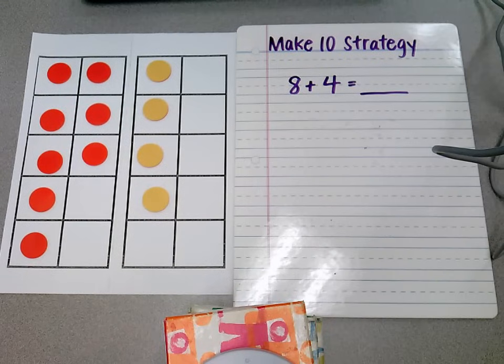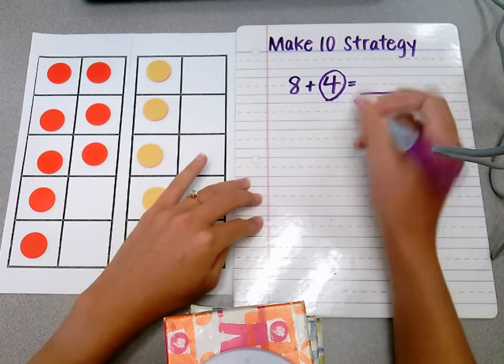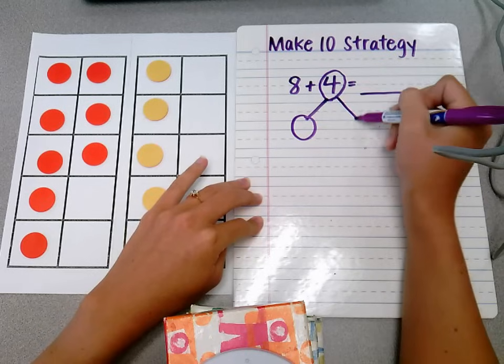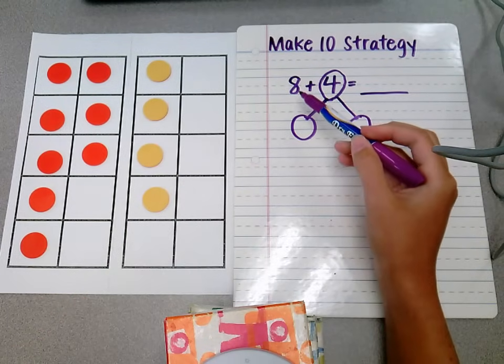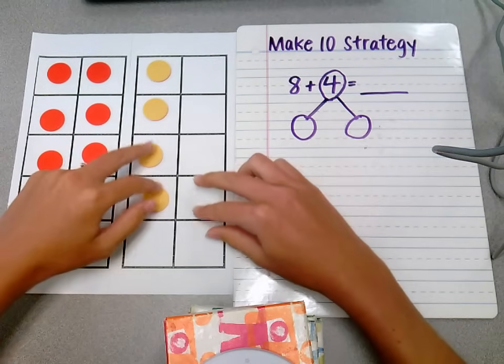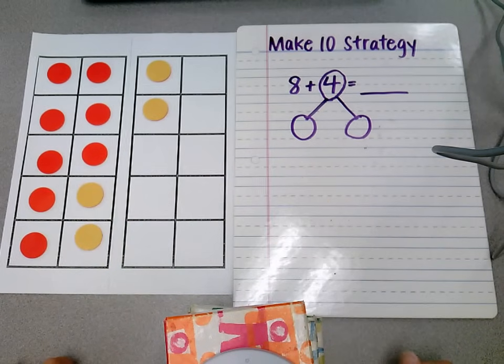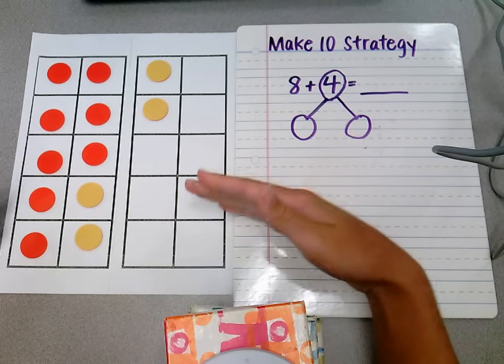8 plus 4. And now we want to make 10. So what we're going to do is decompose this number 4 into a number bond. Essentially, we're asking ourselves, what do we need to make this 8 into a 10? And I tell the kids this is where the magic happens. So the magic happens when we move 2 over to complete the 10 frame. We took the 2 from the 4 and made it into a complete 10 frame.